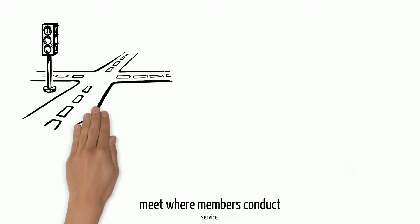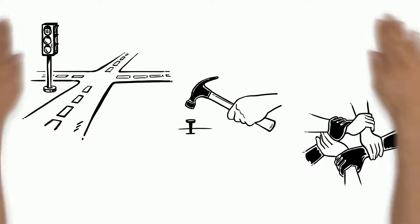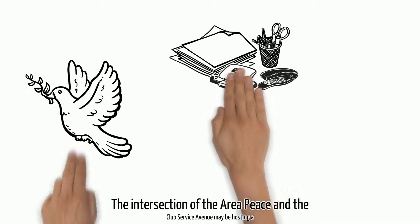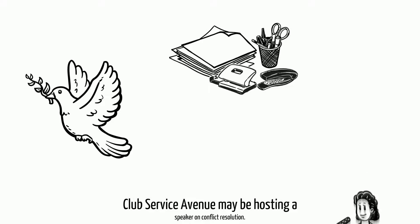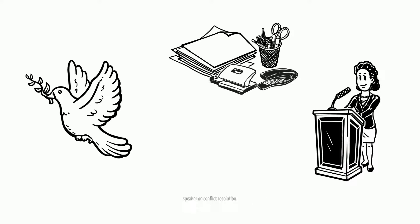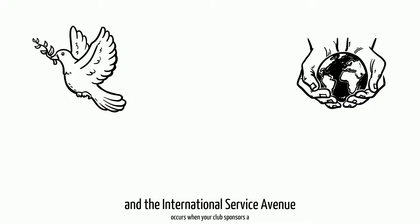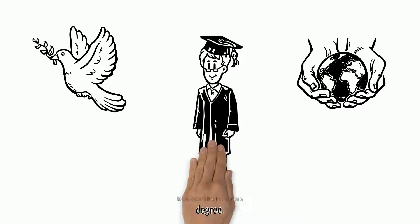The Areas of Focus and Avenues of Service meet where members conduct service. For example, the intersection of the area of focus peace and the club service avenue may be hosting a speaker on conflict resolution. The intersection of peace and the international service avenue occurs when your club sponsors a Rotary Peace Fellow for a graduate degree.